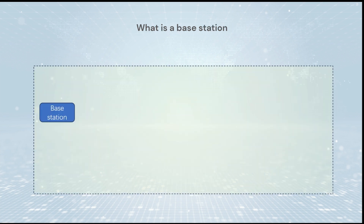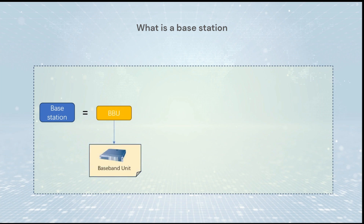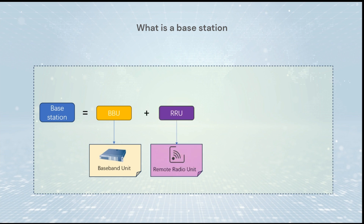What is a base station? A base station typically consists of a BBU (baseband unit), which manages the whole base station; an RRU (remote radio unit), which handles RF signal processing; a feeder, connecting the RRU and antenna; and an antenna, which interfaces with cell phones wirelessly and transmits and receives RF signals.